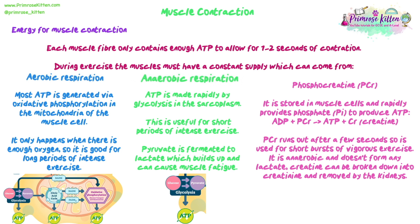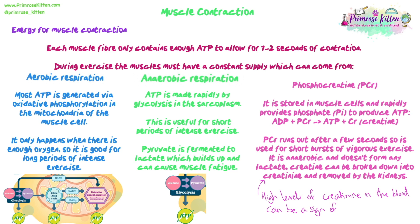There is also a store of a chemical called phosphocreatine in muscle cells. It can rapidly provide phosphate to produce ATP: ADP + phosphocreatine → ATP + creatine, separating the phosphate group from the creatine. Phosphocreatine runs out after a few seconds, so it's only used for short bursts of vigorous exercise. It's anaerobic and doesn't form any lactate. Creatine is broken down into creatinine and removed from the blood by the kidneys; high levels of creatinine can indicate kidney damage.